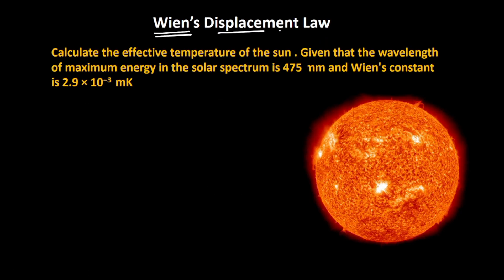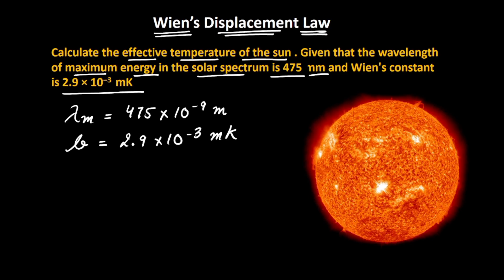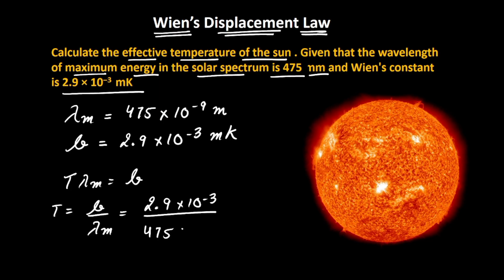One of the most important applications of Wien's Displacement Law is that we can find the effective temperature of any celestial body. For example, we want to find the effective temperature of the Sun, given that the wavelength of maximum energy in the solar spectrum is 475 nanometers. So, lambda m is given as 475 nanometers, which is 475 times 10 to the power minus 9 meters. The value of b is 2.9 times 10 to the power minus 3 meter Kelvin. Using Wien's Displacement Law, T equals b divided by lambda m, which equals 2.9 times 10 to the power negative 3 divided by 475 times 10 to the power negative 9.